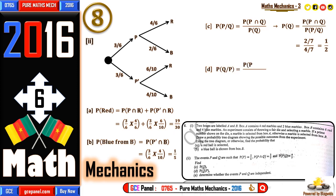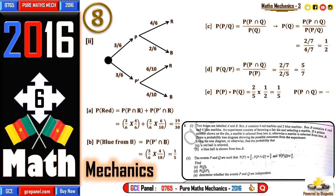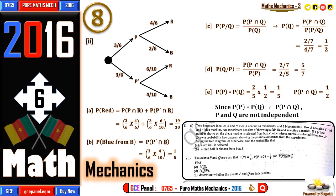For part (d), the probability of Q given P equals P(P ∩ Q) / P(P) = (two over seven) divided by (two over five), which equals five over seven. For part (e), to determine independence: P(P) × P(Q) = two over five times one over two = one fifth. But P(P ∩ Q) = two on seven, which is not equal to one fifth. Since P(P) × P(Q) ≠ P(P ∩ Q), we conclude that events P and Q are not independent.